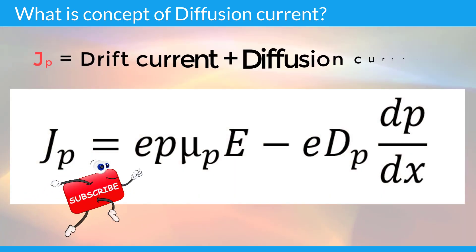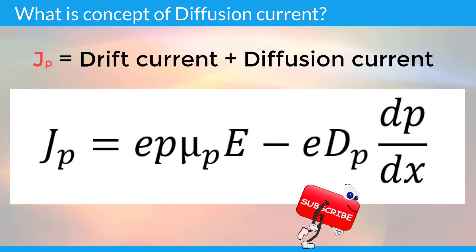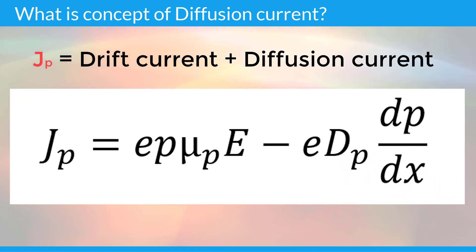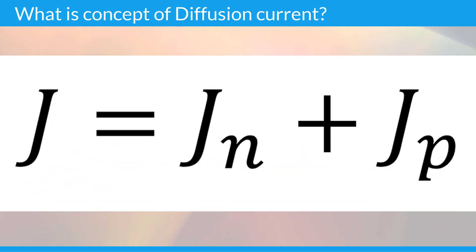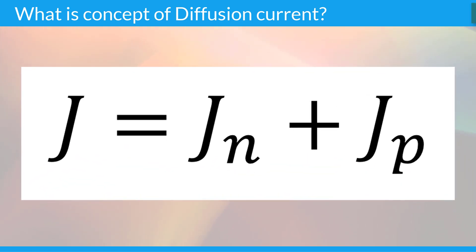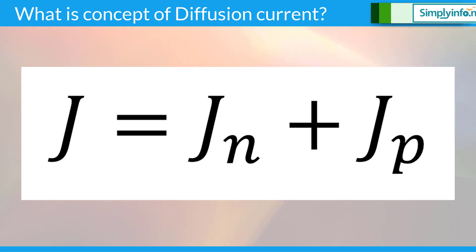The total current density due to holes is the sum of drift and diffusion currents: Jp = e·p·μp·E - e·Dp·(dp/dx). The total current density due to electrons and holes is given by J = Jn + Jp.